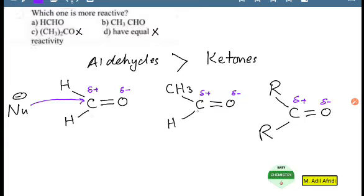To aldehyde is more reactive. Now formaldehyde and acetaldehyde. In formaldehyde, nucleophile ka positive carbon tak aana easy hai. Why? Because these two hydrogens are smaller in size, so nucleophile can approach to the carbon.